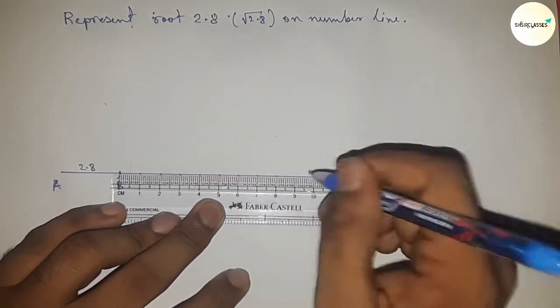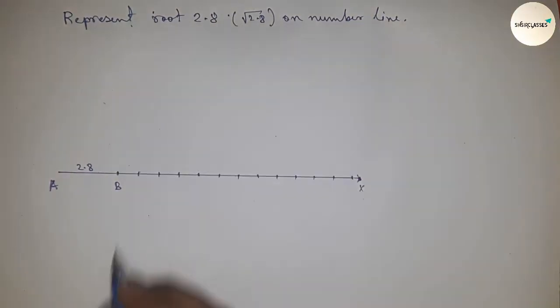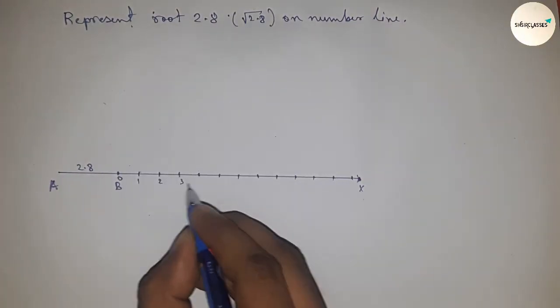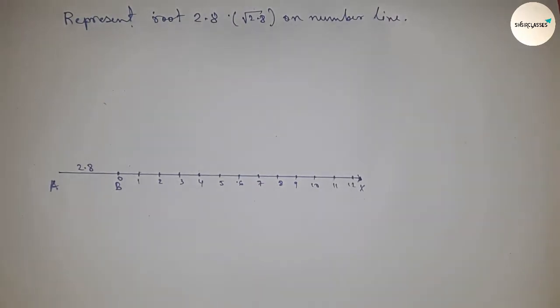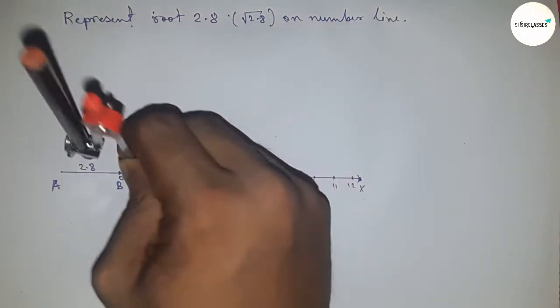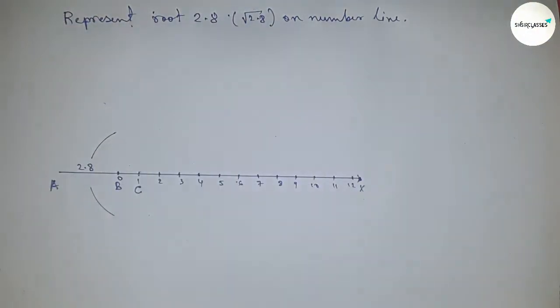Mark the numbers using a scale: 0, 1, 2, 3, 4, 5, and so on. This is point C. Next, we need to bisect the line AC by taking greater than half of AC.